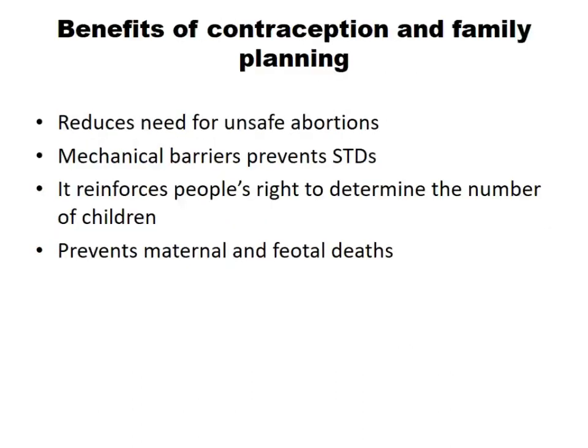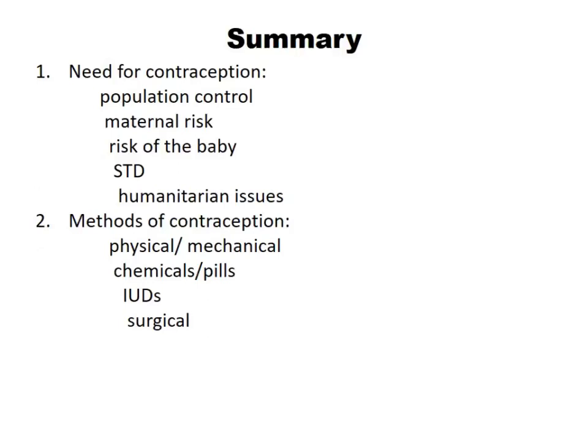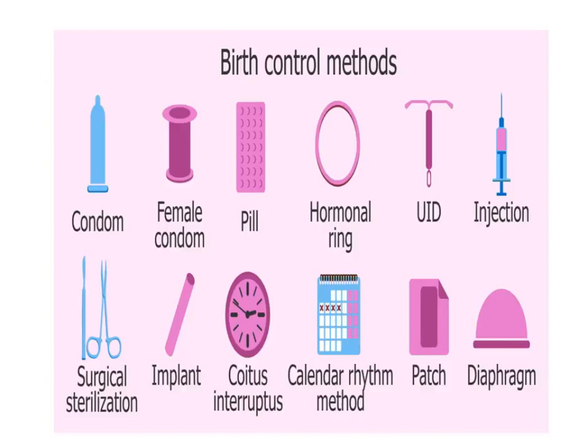The benefits of contraception and family planning are: it reduces the need for unsafe abortions; it prevents sexually transmitted diseases; it reinforces people's right to determine the number of children they want and when; and it prevents unwanted maternal and fetal deaths. In summary, the need for contraception addresses population control, maternal risk, risk to the baby, sexually transmitted diseases, and humanitarian issues like rape.